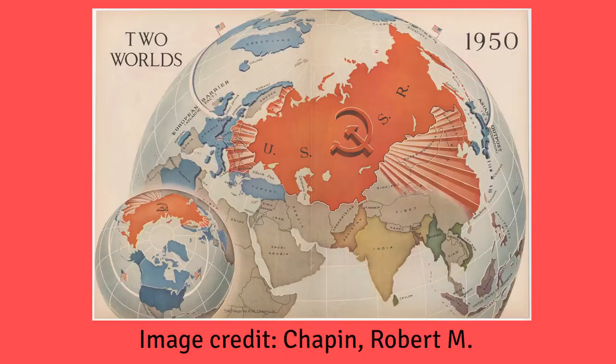Another example is in the Cold War, where the United States published maps that showed the Soviet Union to be much bigger and more threatening than it actually was, using both size and color and lots of different things as a form of propaganda to justify their military spending and their foreign policy.